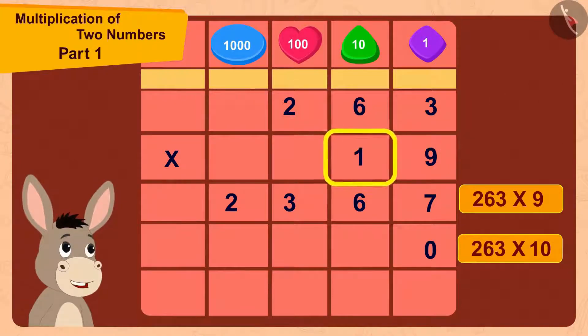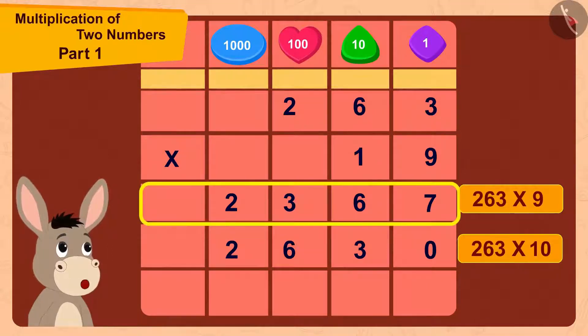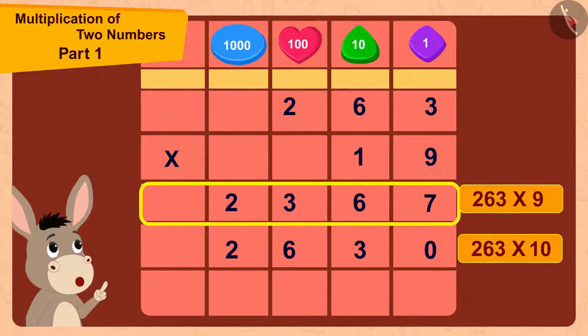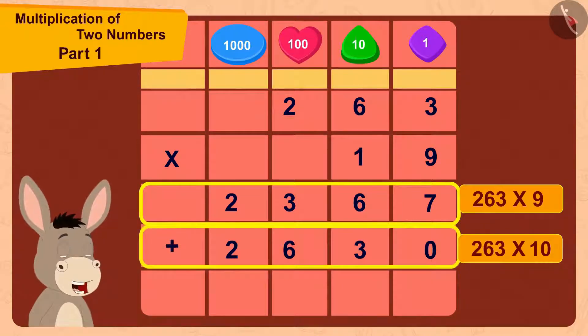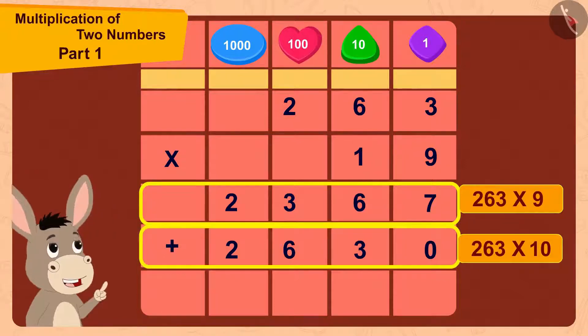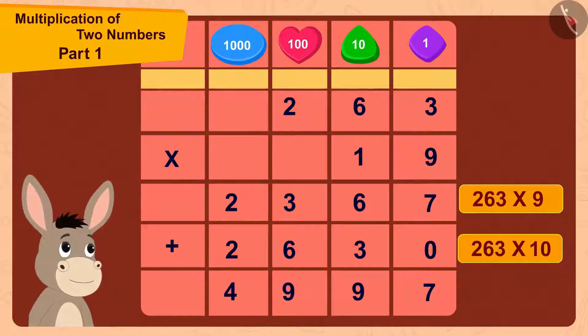263 multiplied by 1 is 263. And now finally, in this way, 2367 plus 2630 is 4997.